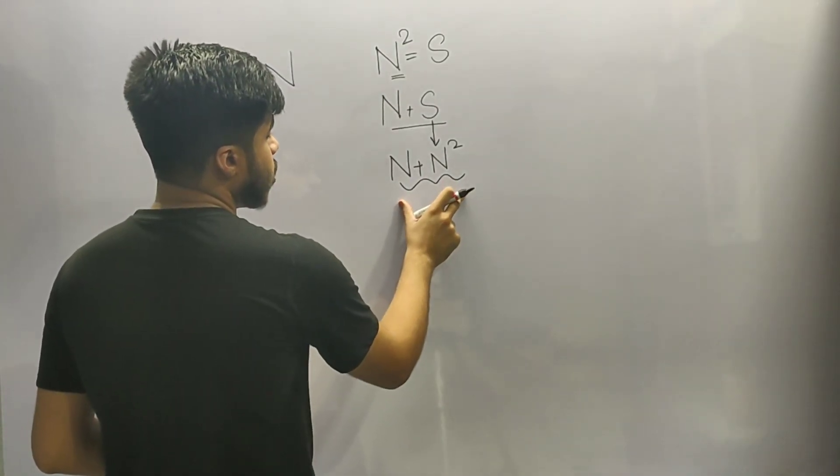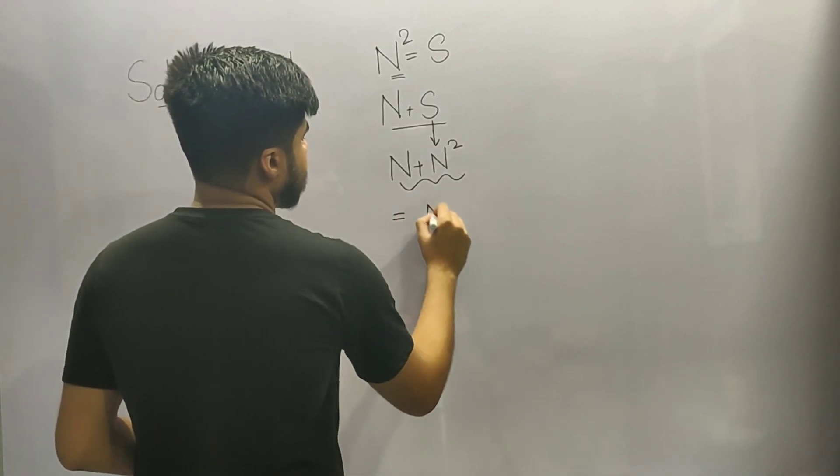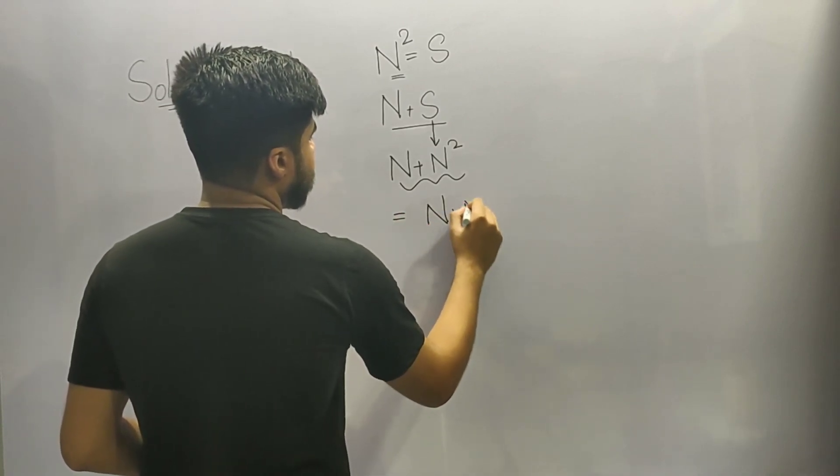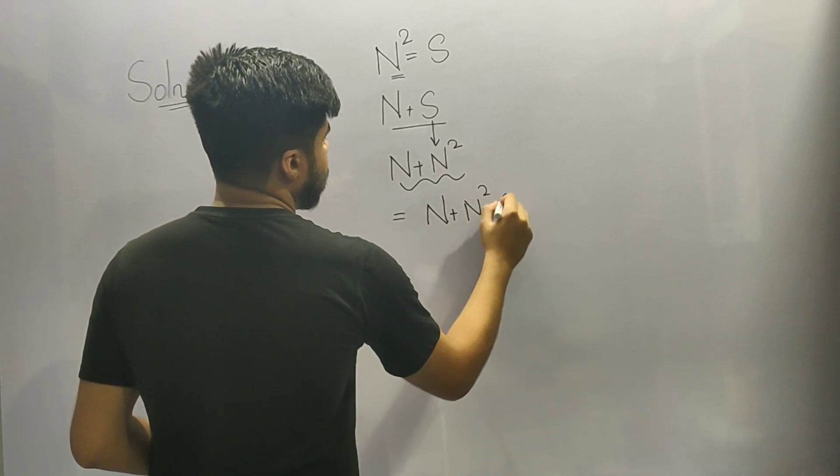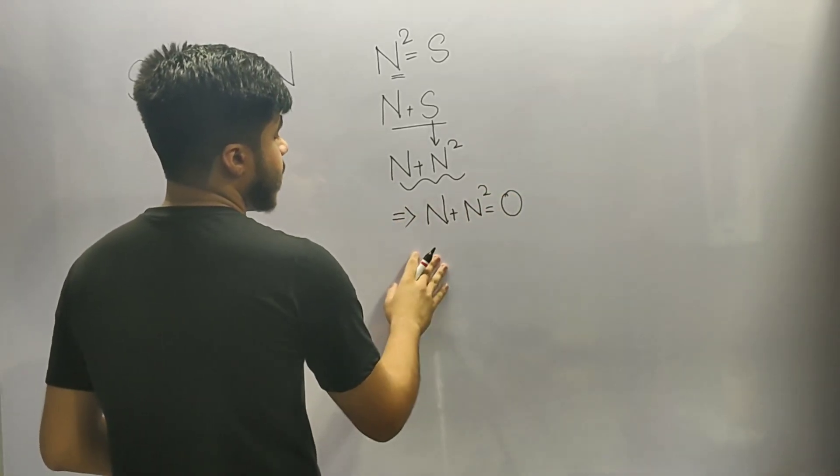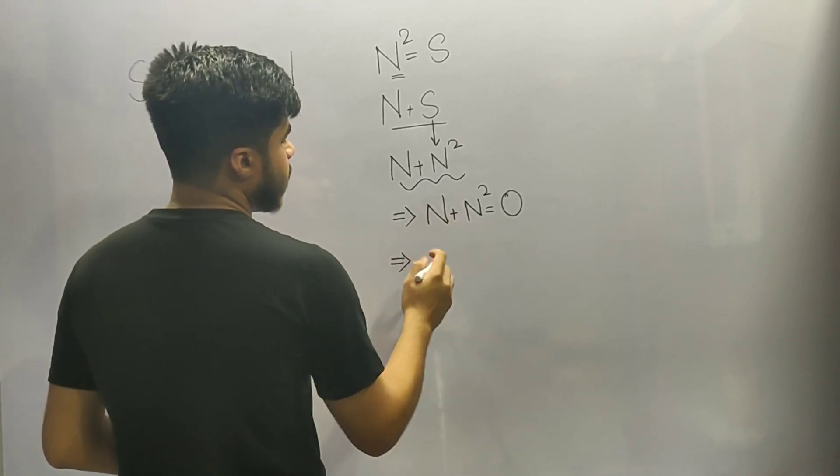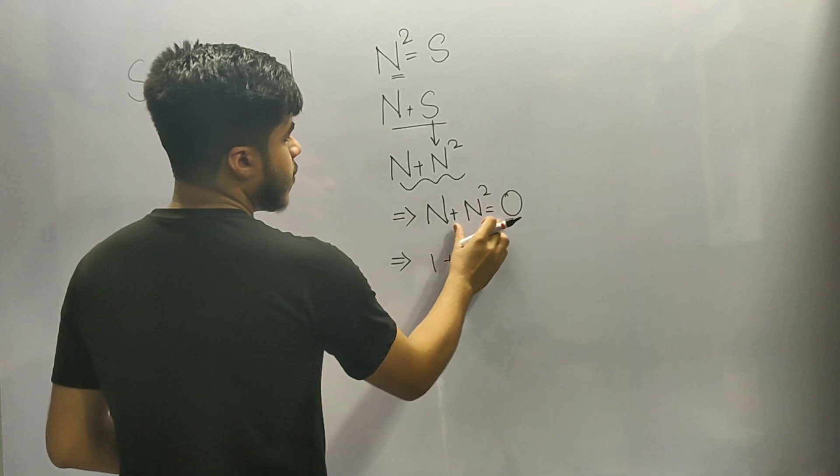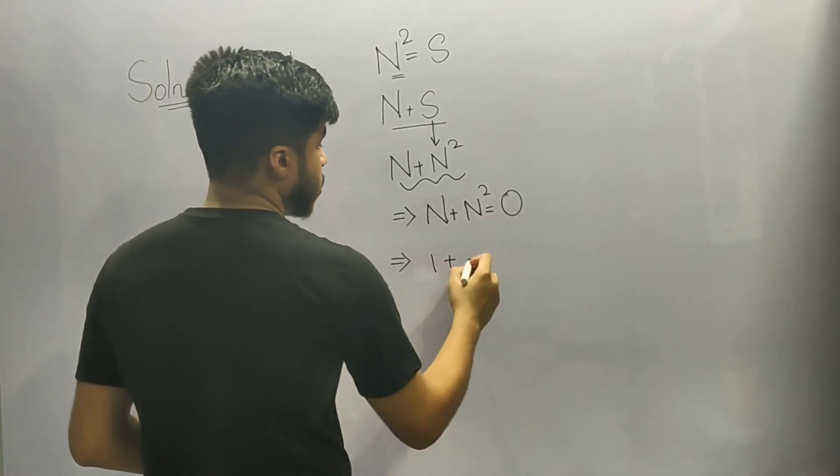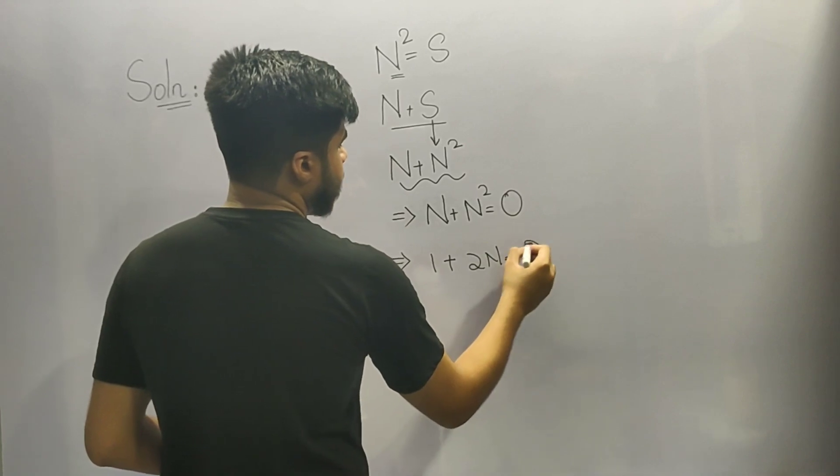We can equate this equation to 0 and then differentiate it. So upon equating this equation to 0, we will get n plus n square is equal to 0. Now we will differentiate both the sides with respect to n and we will get upon differentiating n we will get 1, upon differentiating n square we will get 2n, and 0 is a constant so we will get 0 only.